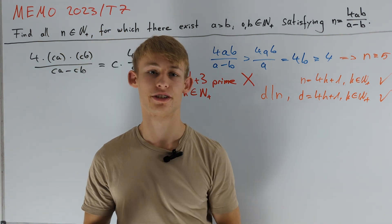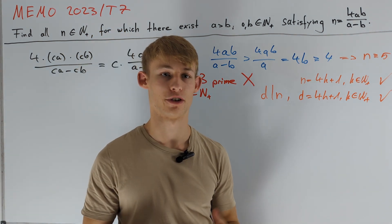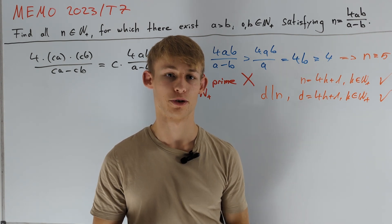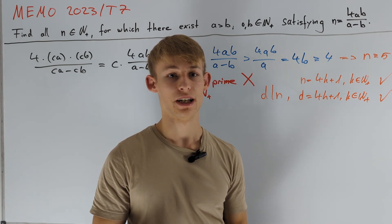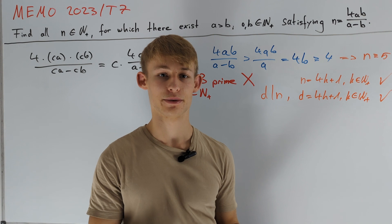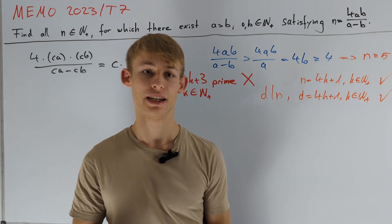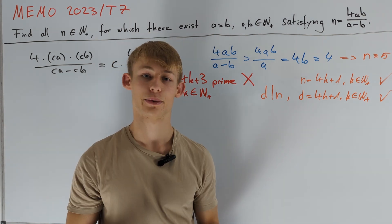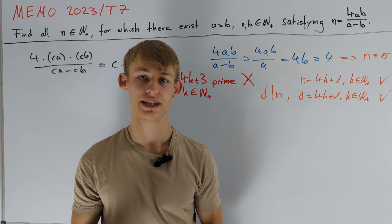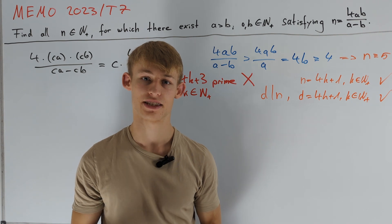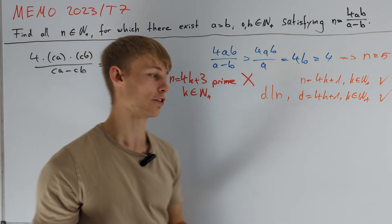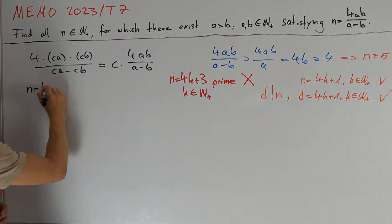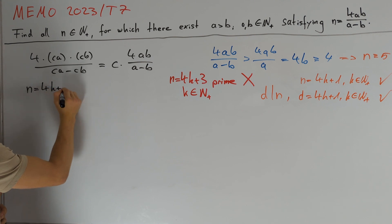It remains to consider even values for n. We want to try a similar approach as before, but simply letting n equal 2k doesn't give a general result. So we again consider the residue class of n modulo 4 and start with the case n equals 4k plus 2.